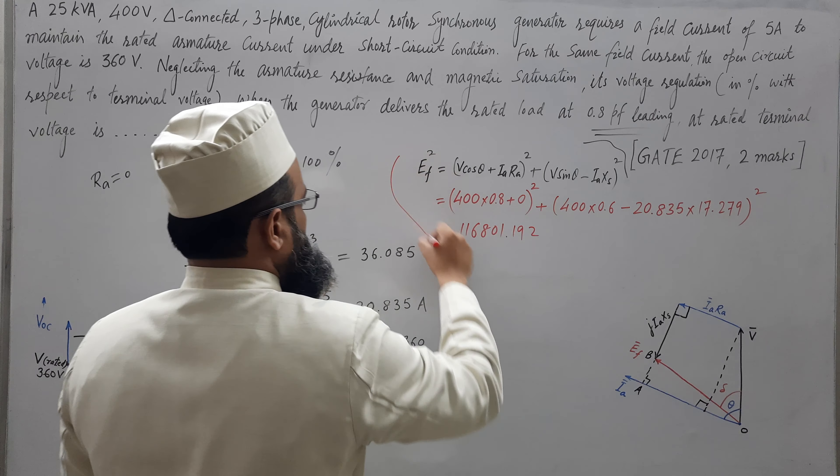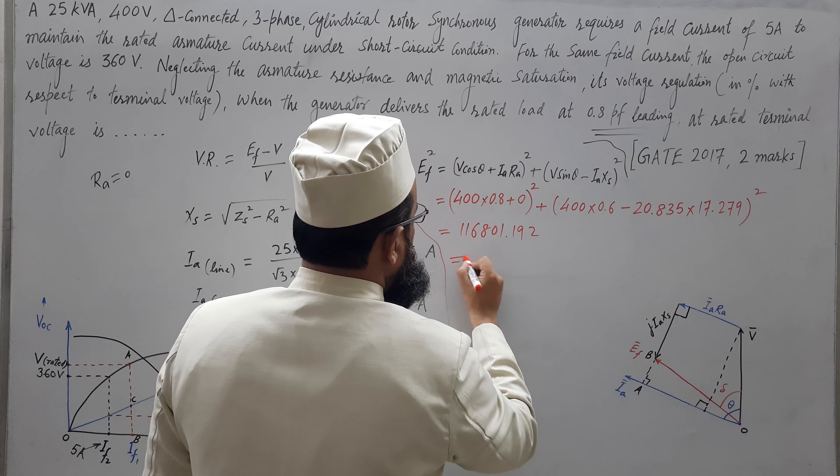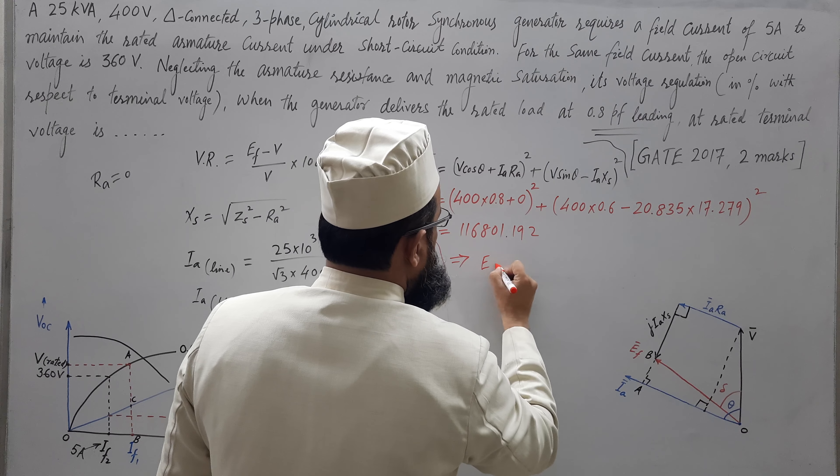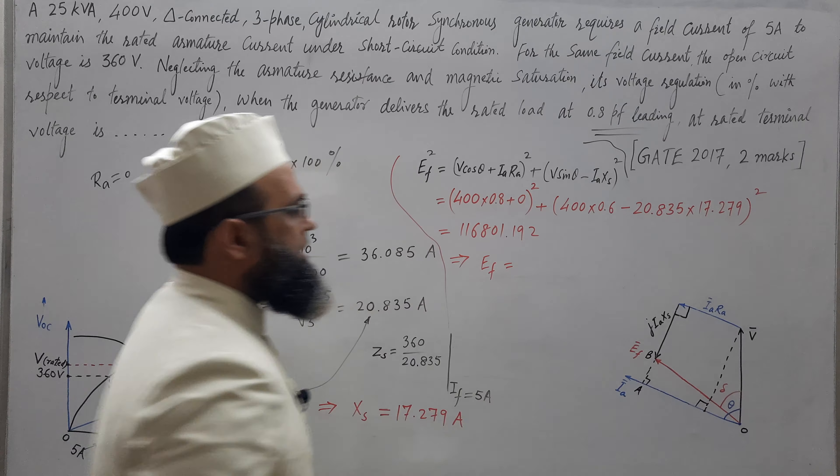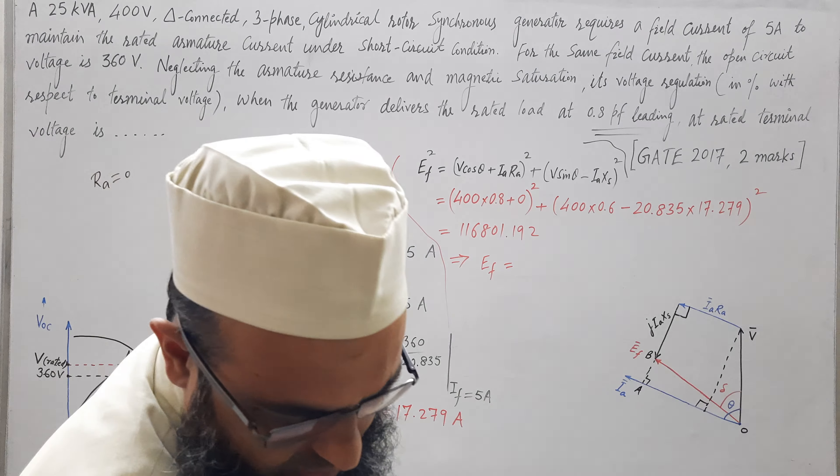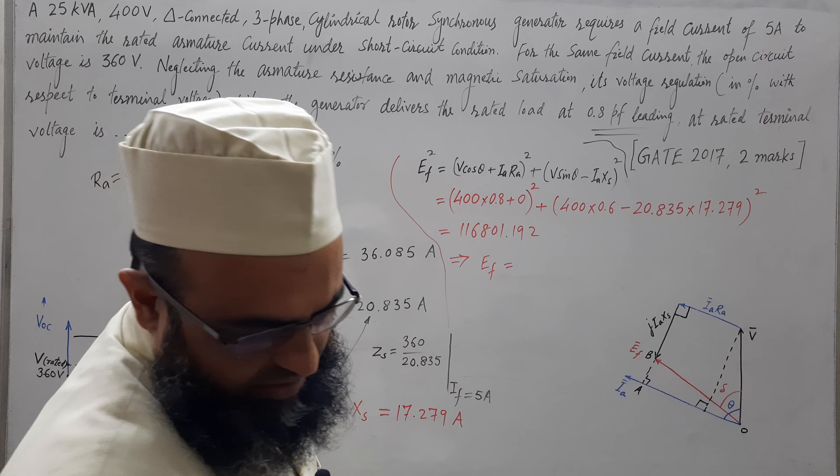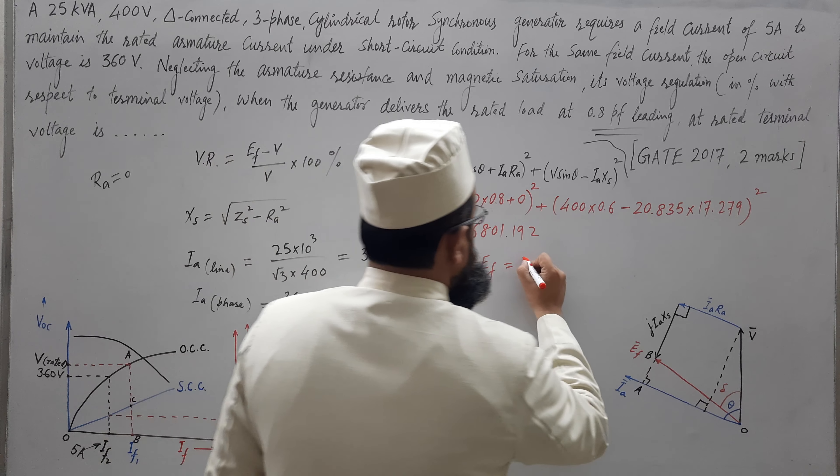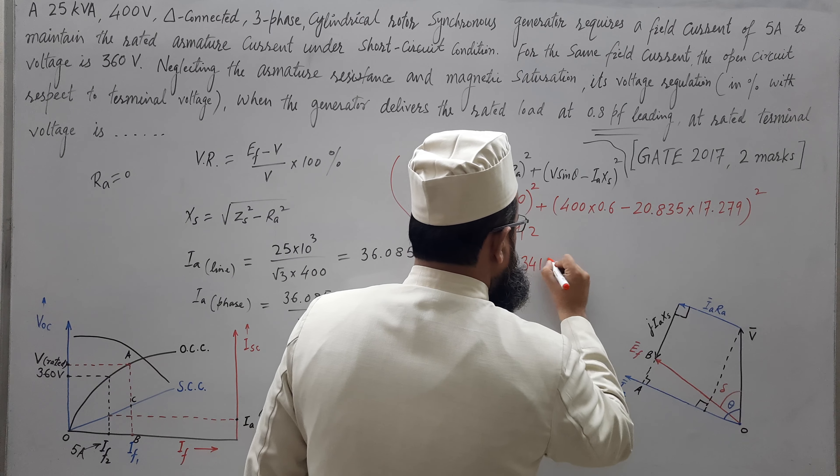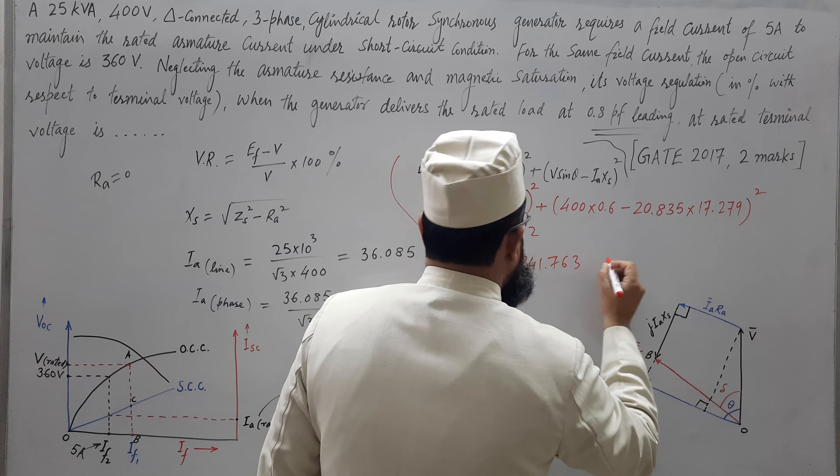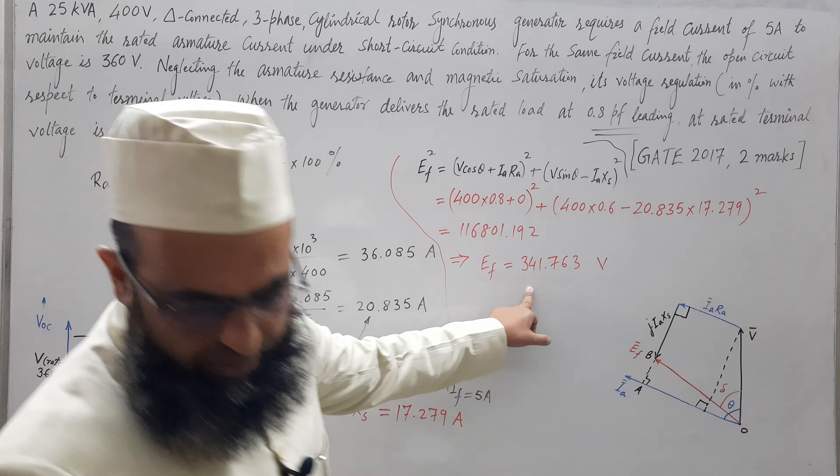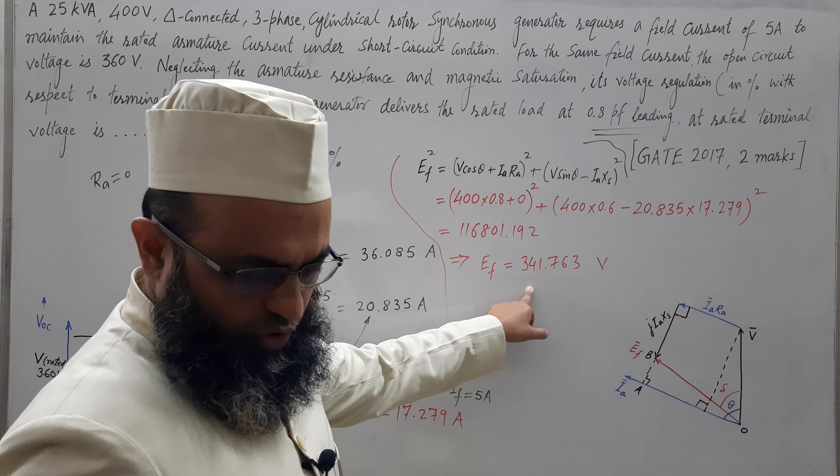This is EF square, hence take a square root to get the magnitude EF no load terminal voltage which is coming out to be 341.763 volt.